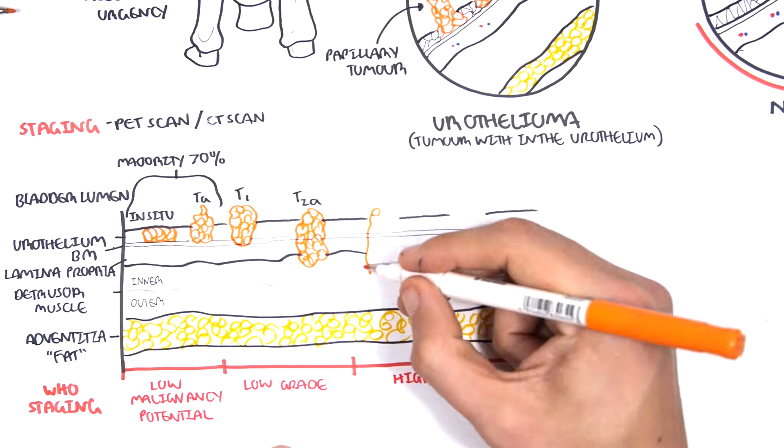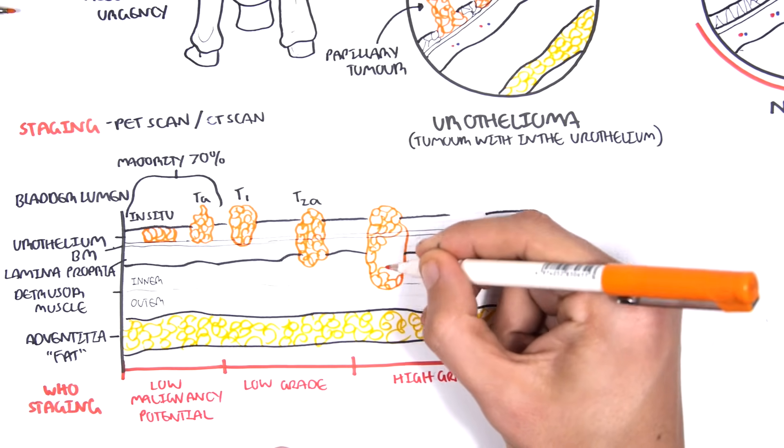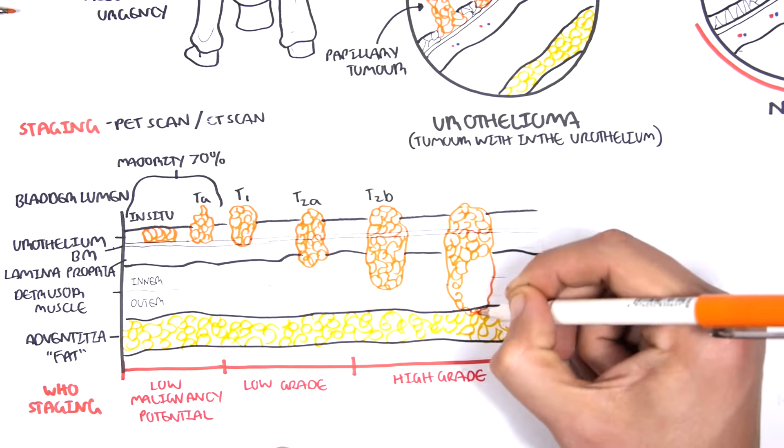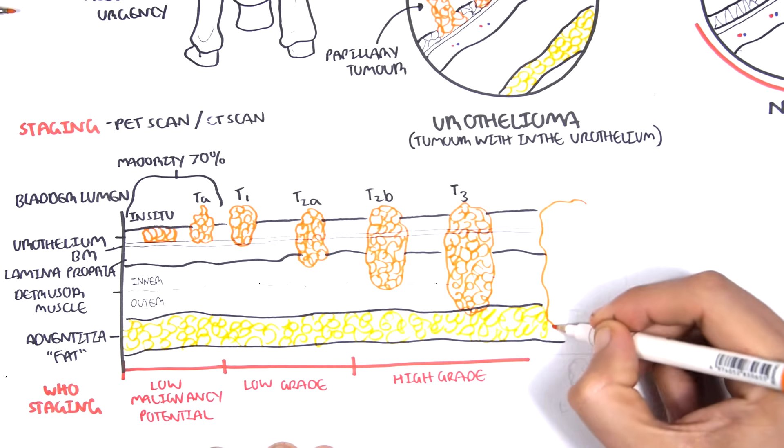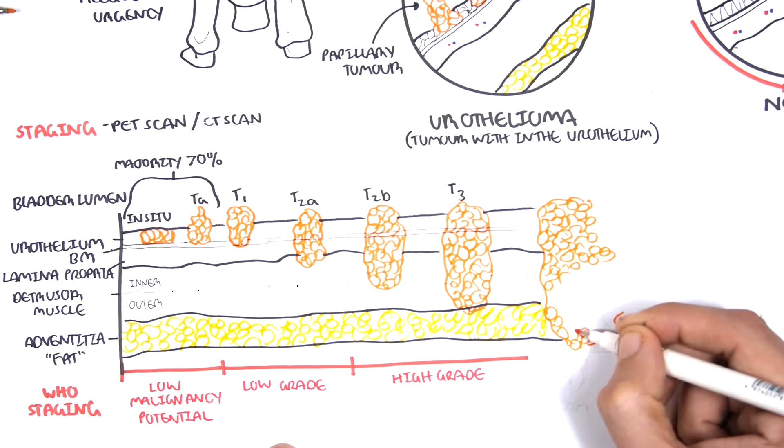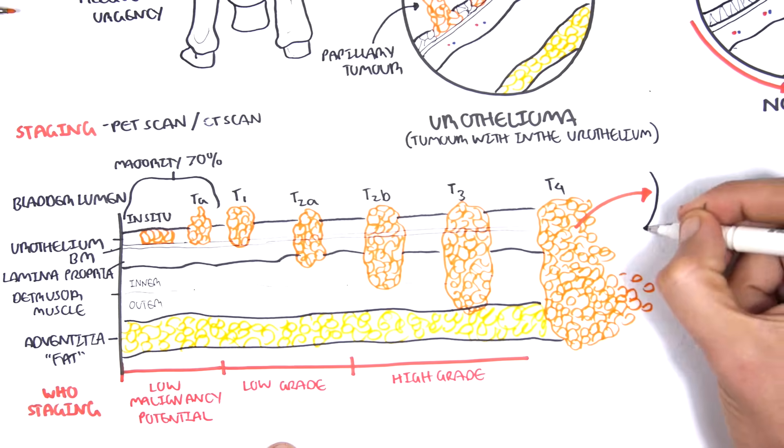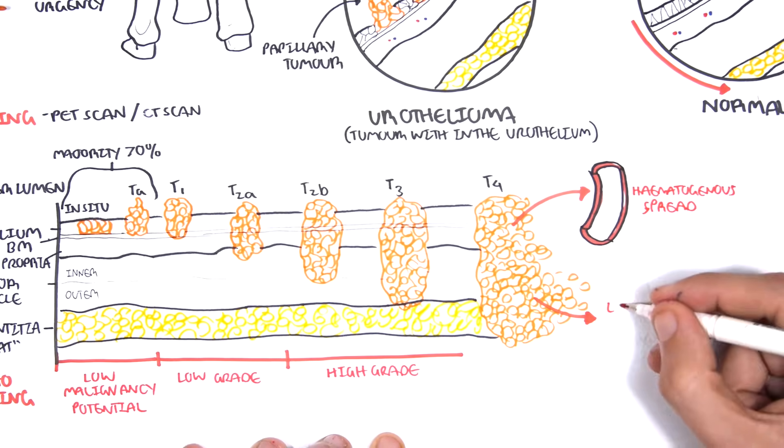The high grade stage includes T2b, which is where the tumor has extended all the way towards the deep layer of the detrusor muscle. T3 is where the tumor has invaded the perivesical tissues. T4 is tumor invading adjacent organs or the tissues of those organs. From here, the tumor can metastasize via hematogenous spread, local spread, or lymphatic spread.